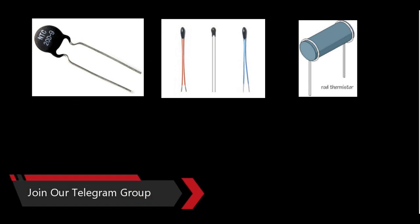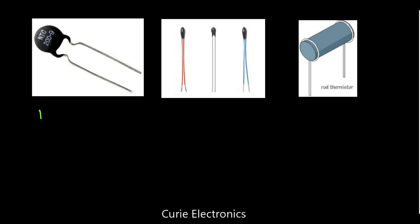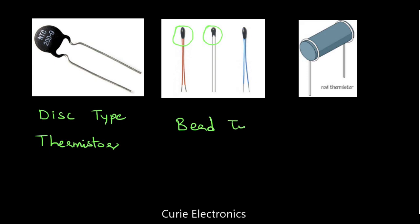A thermistor can be made in different configurations — it is the same device in different forms. This is the disc type thermistor. These bead type thermistors I have seen in my refrigerator. And this is the rod type thermistor. Mainly these three configurations are there: disc type, bead type, and rod type.